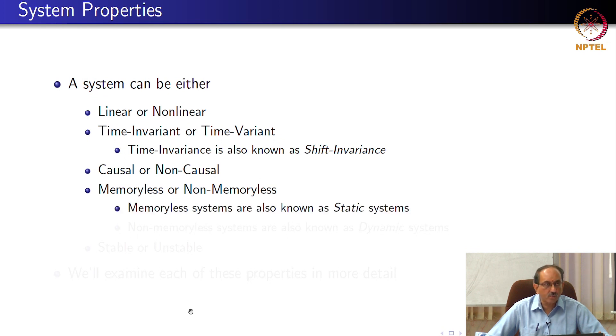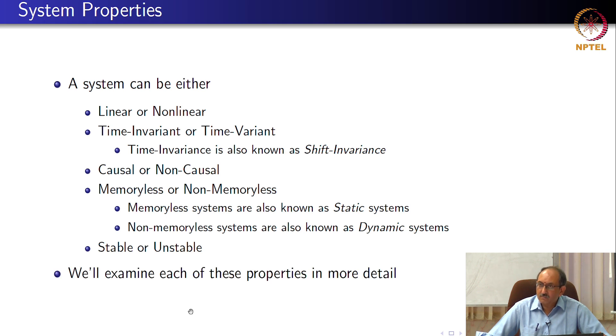Memoryless systems are also known as static systems. And systems with memory, what is the other name that you may have known from your earlier course? The fact that memoryless systems are called static should give you a clue? Dynamic. Dynamic, ok. So, non-memoryless systems are also called dynamic. Systems can be stable or unstable. Stability, of course, is a very important property for both man and machine. So, we will examine each of these properties in more detail.